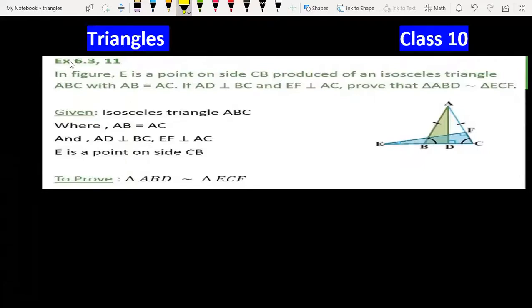Triangle chapter exercise 6.3, 11th question, NCERT class 10. In the figure, E is a point on side CB produced. AB = AC (isosceles triangle), AD perpendicular, EF perpendicular - this is all given.